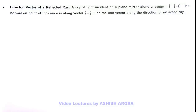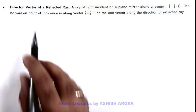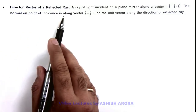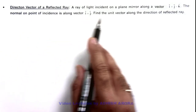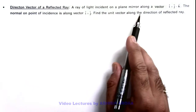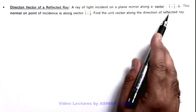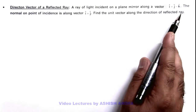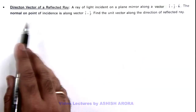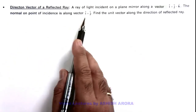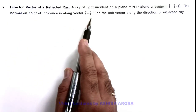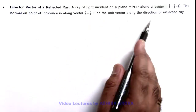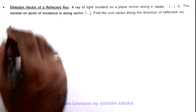In this illustration we'll discuss the direction vector of a reflected ray. We are given that a ray of light is incident on a plane mirror along a vector î + ĵ − k̂, and the normal at the point of incidence is along î + ĵ. We are required to find a unit vector along the direction of the reflected ray.